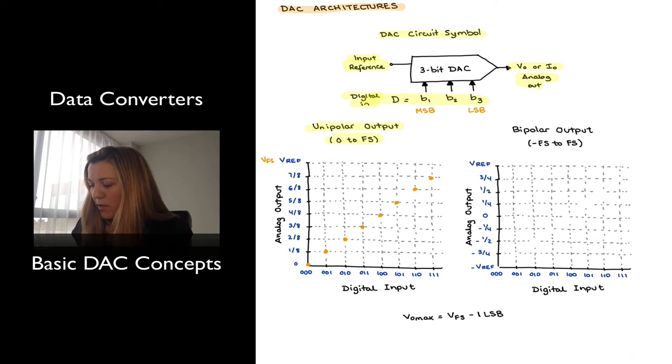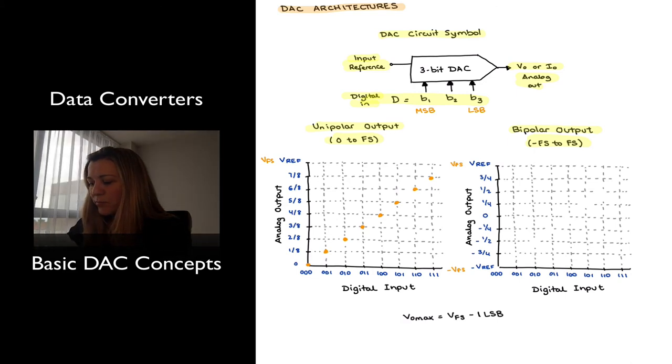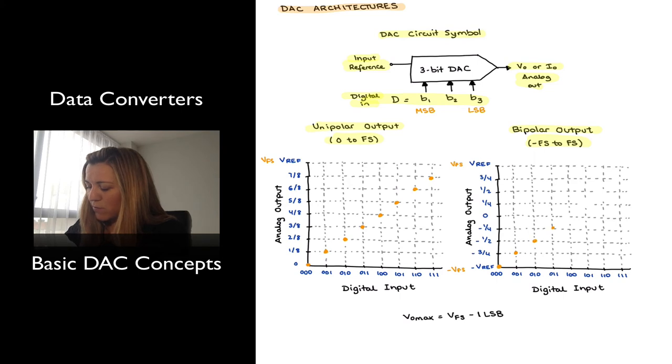Another possibility would be to have a bipolar output for our circuit, in which case my output, instead of going from 0 to some full-scale voltage, goes from a negative full-scale voltage to positive full-scale voltage. So from negative Vref to positive Vref. Where again Vref, I can also say Vfs and minus Vfs. But the idea is that I go from a negative value to a positive value. And again I can do my mapping exercise. My 0,0,0 in a bipolar output configuration will correspond to negative Vref, or negative full-scale voltage. Then will come minus three-fourths of that, minus one-half, minus one-fourth.